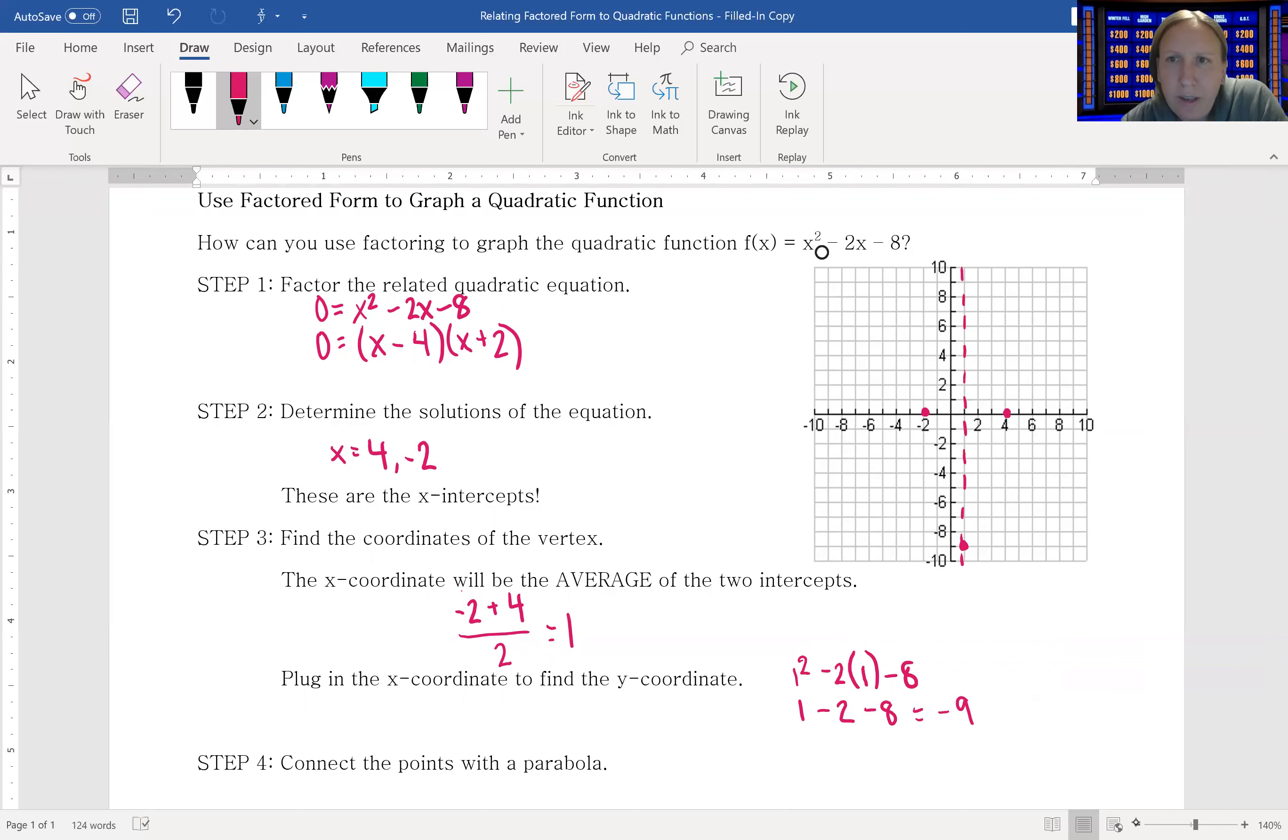I have my two intercepts, so I'm going to take my points and connect them with a parabola. And that is how you can graph a quadratic function using factored form.